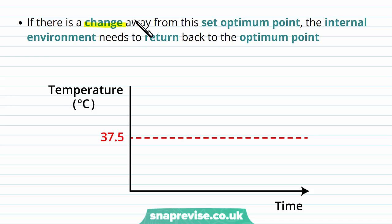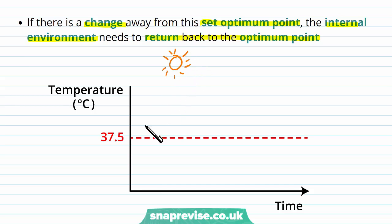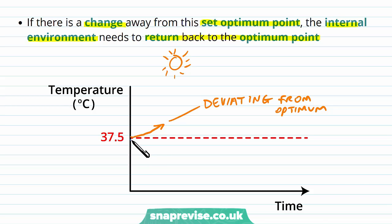If there's ever a change away from this set optimum point, the body needs to recognise this and the internal environment needs to return back to the optimum. For example, if we suddenly enter an environment with more sunshine or a hotter temperature, the temperature inside the body will start going up, deviating from the optimum. This can also happen in the opposite direction — if we entered a colder area, the temperature inside would drop. Either way, we're deviating from the 37.5 value.